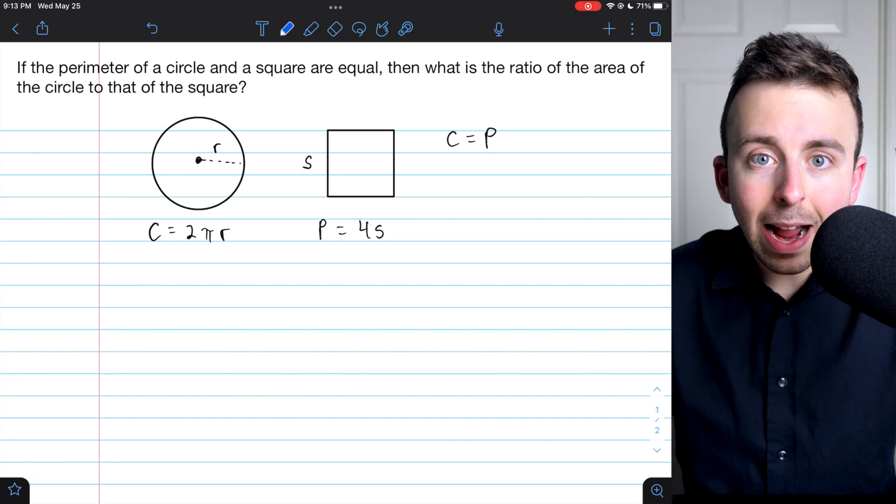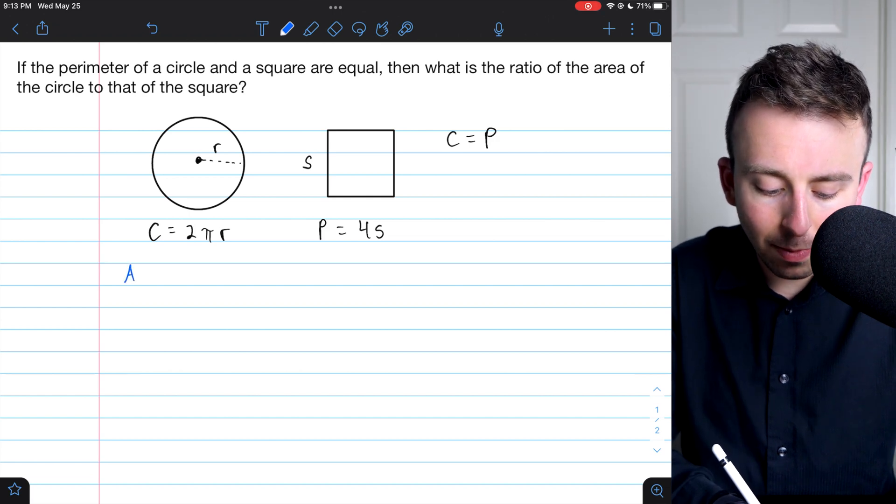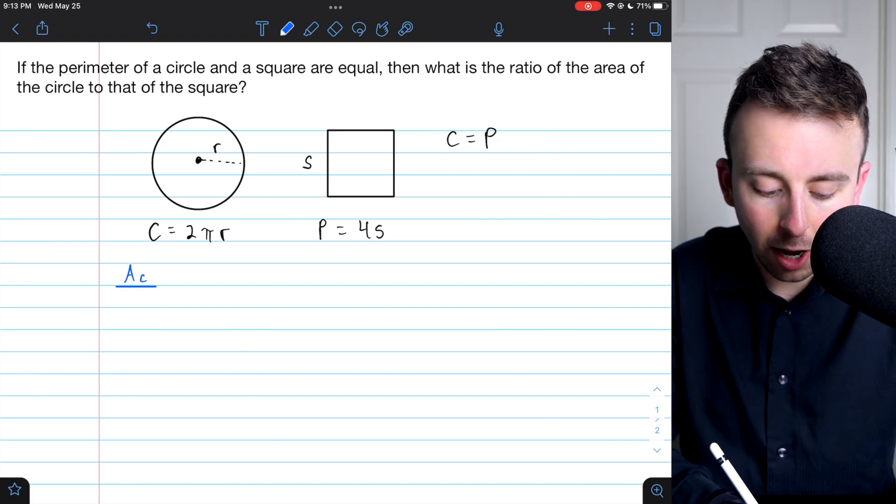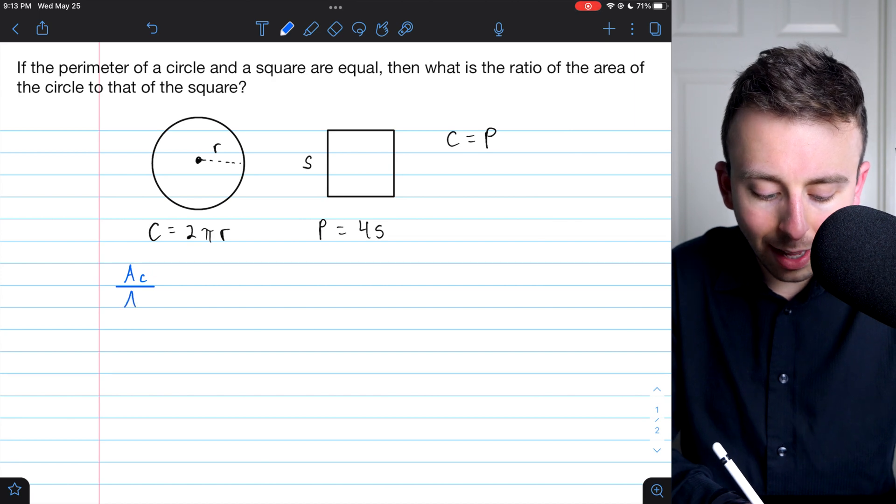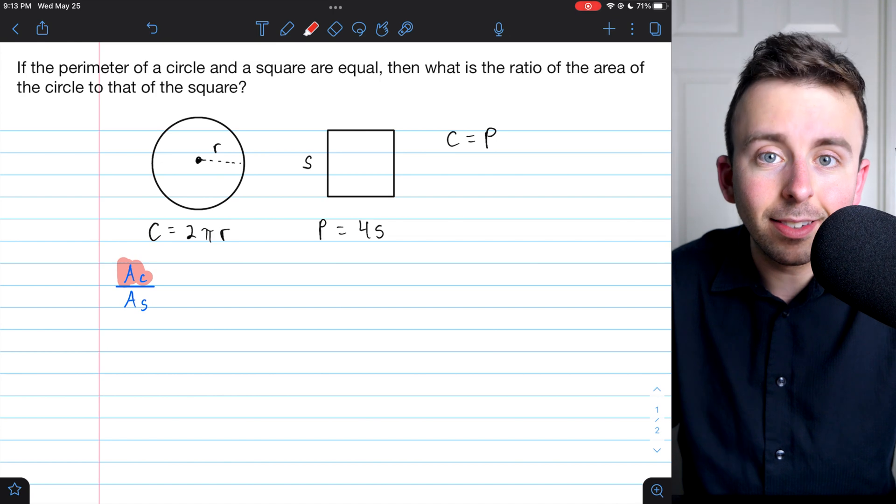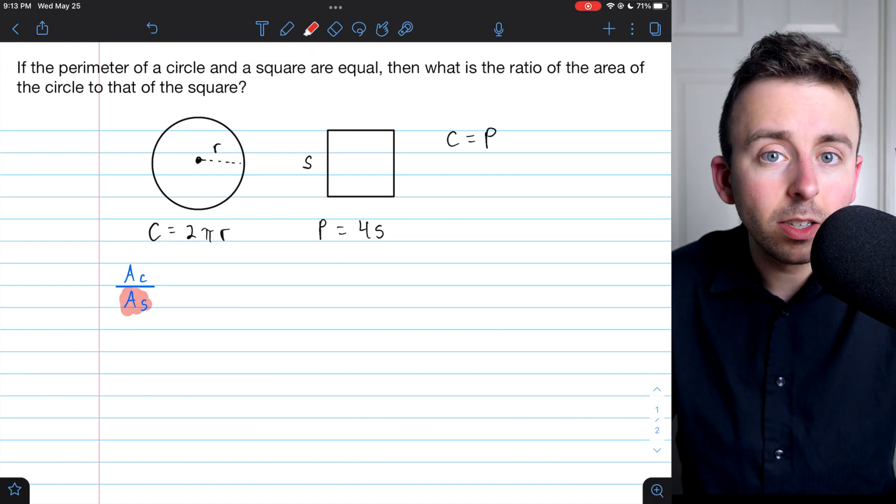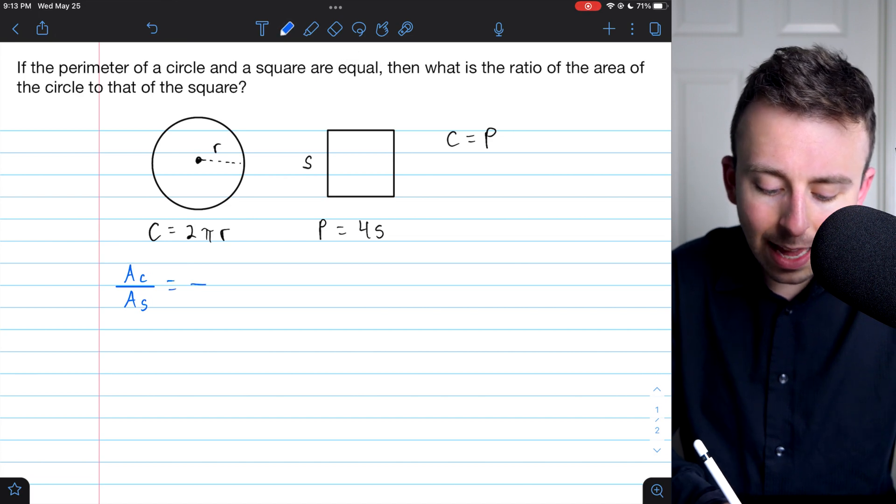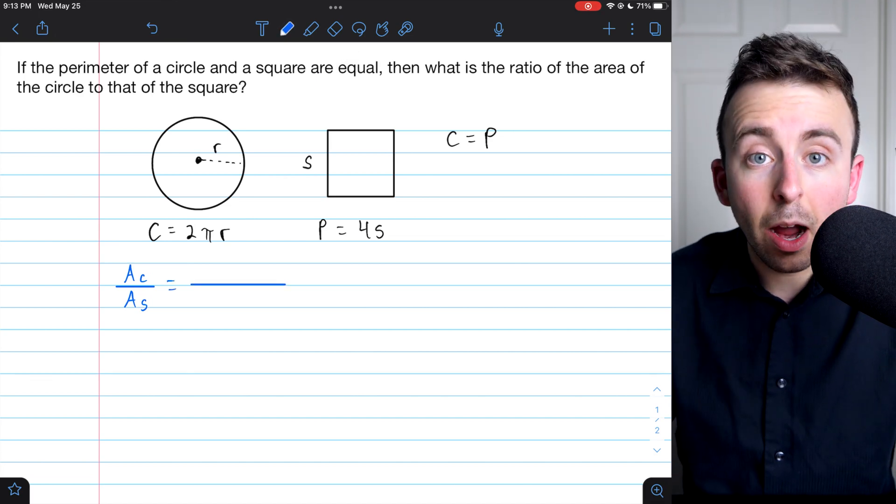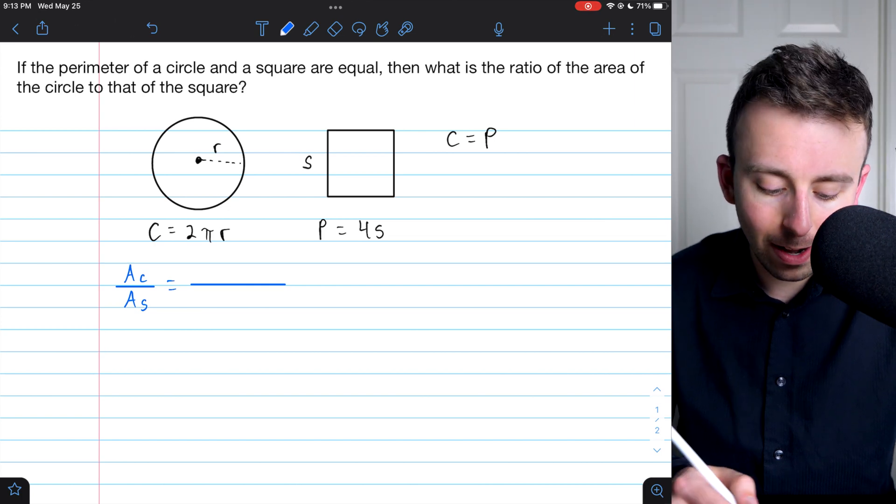The ratio of their areas is just found by dividing their areas. That's what is meant by ratio. So to find this, we'll take the area of the circle, which I'll denote AC, and divide it by the area of the square, denoted AS. So to begin, let's just write out what the area of the circle is, and what the area of the square is.